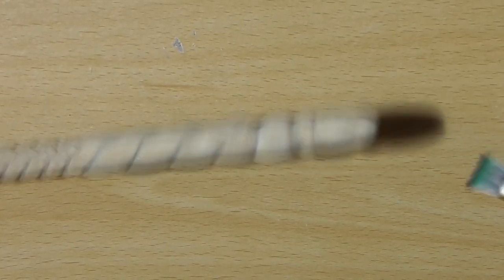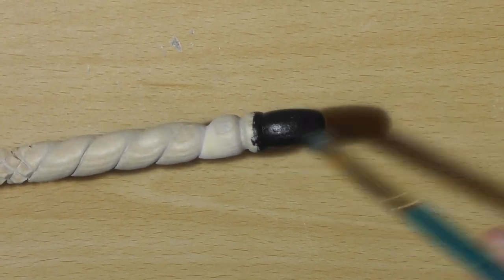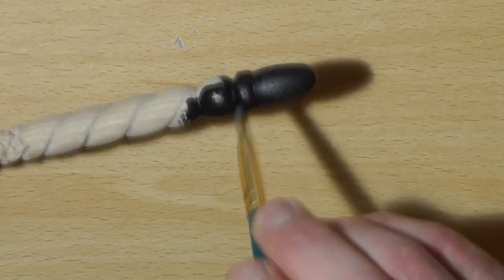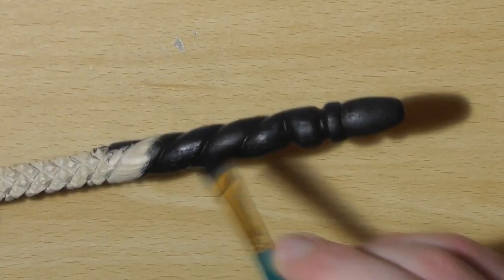For painting the wand, I then used Daler and Rowney System 3 black acrylic paint, which I covered the entire wand in. On this video you can see that I do a coat, but I technically did two coats just to make sure it covered correctly.